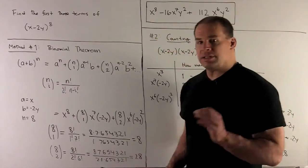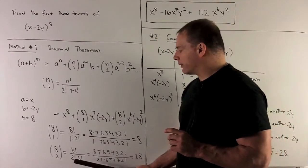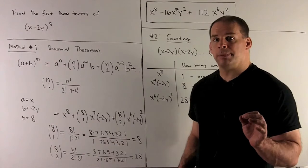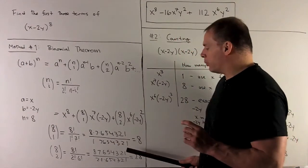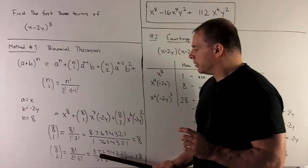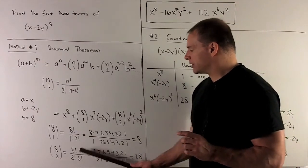8 choose 2, same idea. We'll have 8 factorial over 2 factorial times 6 factorial. 2 + 6 is equal to 8. And then we just multiply. So, I'll have 1, 2, 3, all the way up to 8. 2 factorial is 1 times 2. 6 factorial, 1, 2, 3, up through 6.